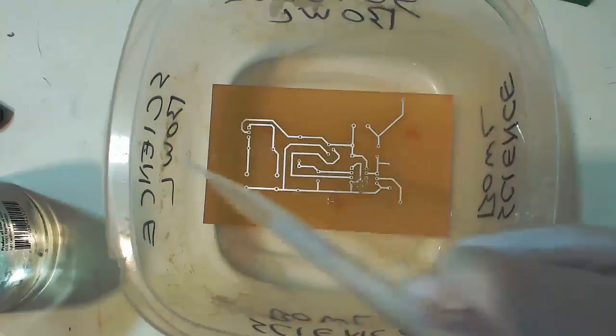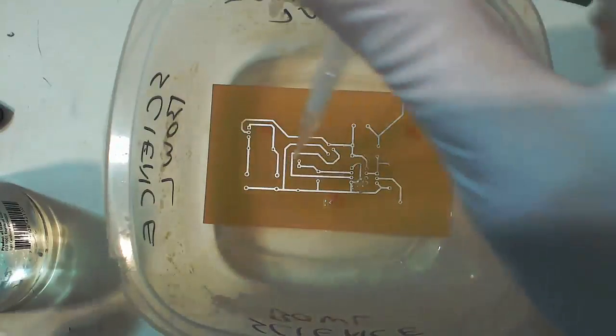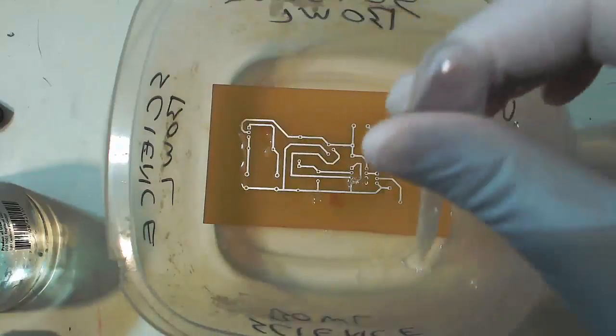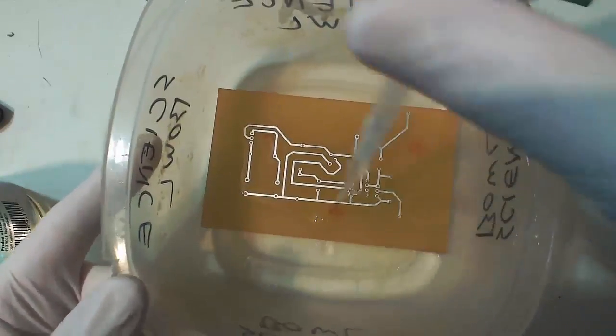There are general guidelines for neutralizing spent solution on MG Chemical's website. Once the tinning is finished, the PCB is ready for components. We'll show you how to lay those out and solder them on in another video. Thanks for watching.